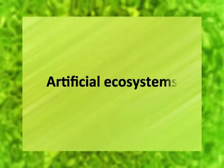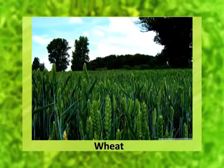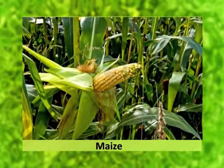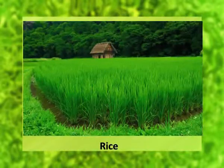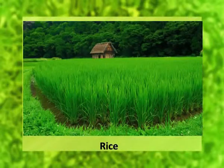Now, artificial ecosystems. Artificial ecosystems are maintained artificially by man, whereby addition of energy and planned manipulations, the natural balance is disturbed regularly. For example, croplands like wheat, maize, and rice fields are artificial ecosystems.